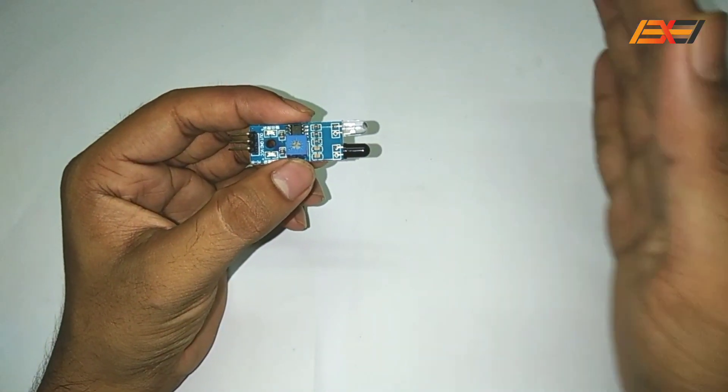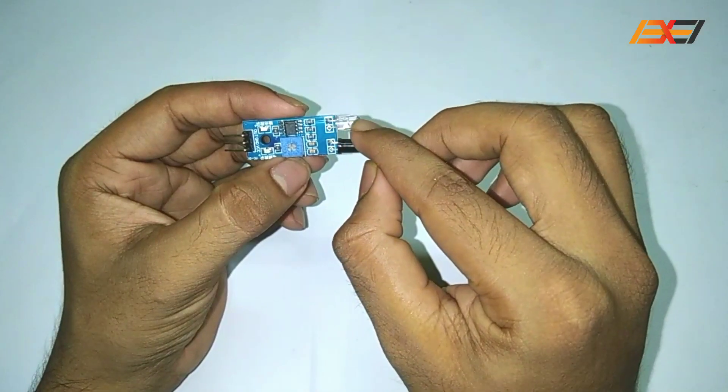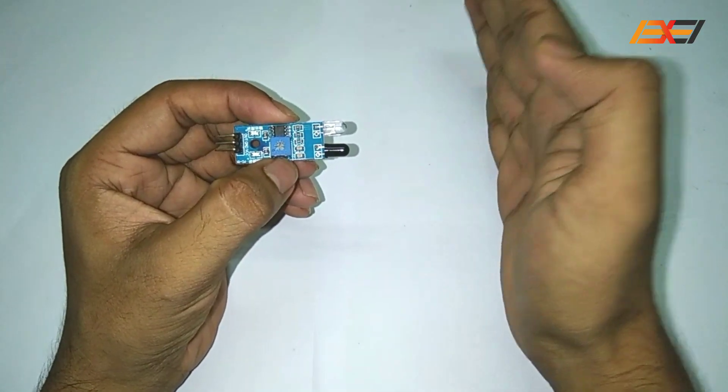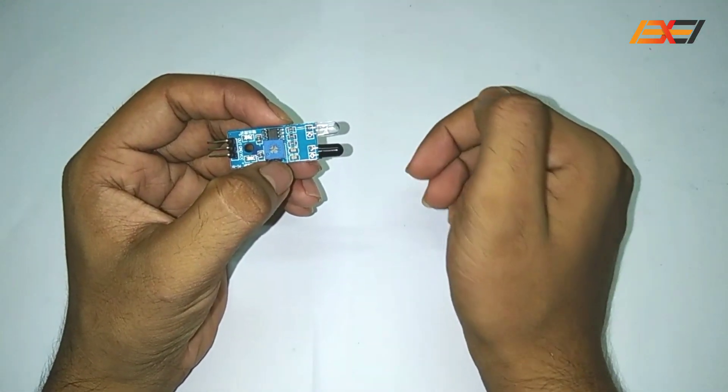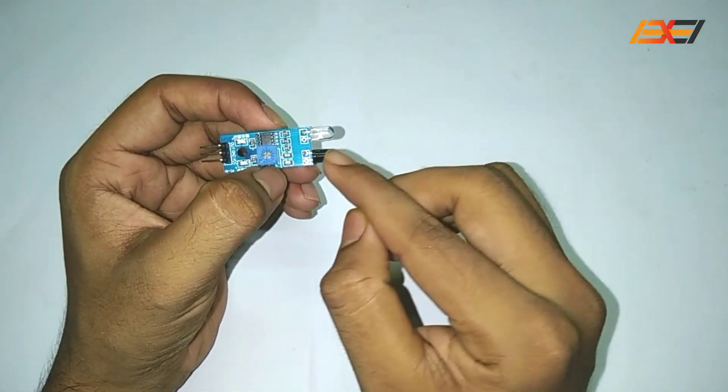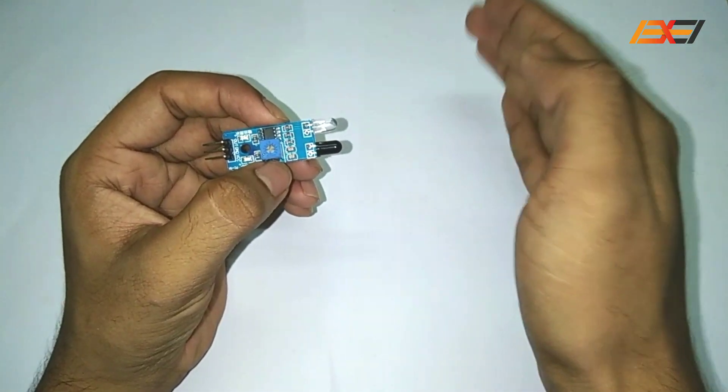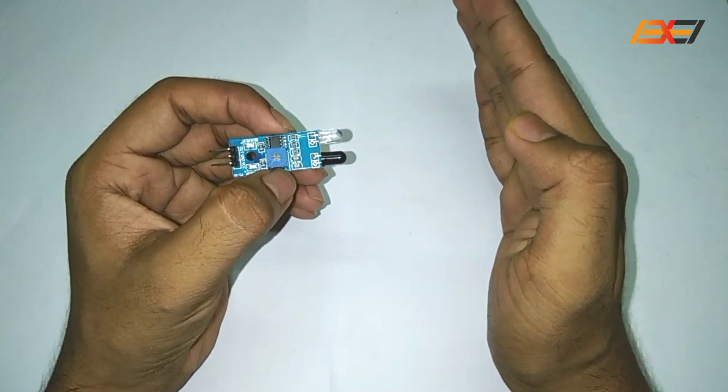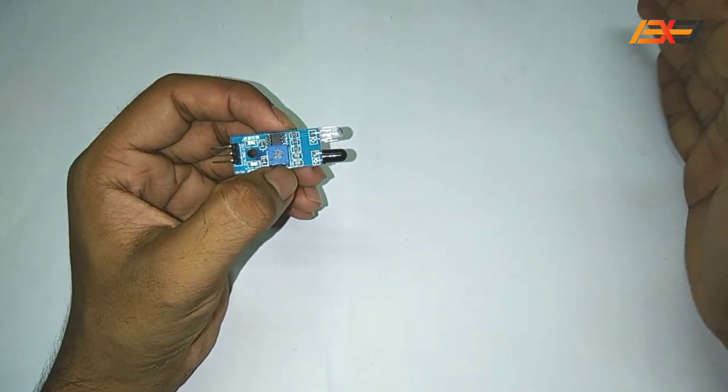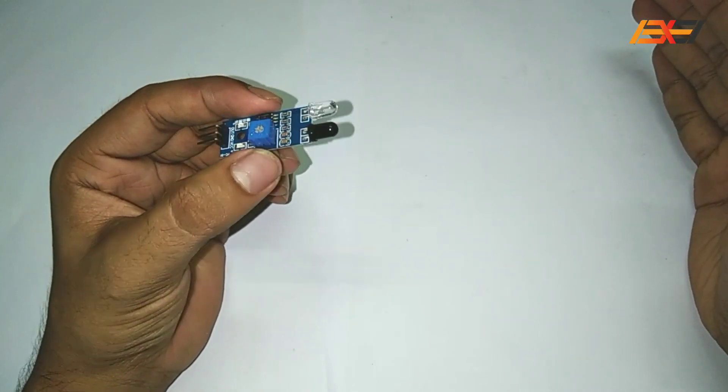Now what happens when an object comes in front of this IR sensor, within the range of this IR sensor, the infrared radiations emitted by this TxLED fall on the object and the object reflects those infrared radiations. If those reflected infrared radiations fall on this black LED then it gives one as output. And if the reflected infrared radiations do not fall on the black LED or if the object is not in the range of this infrared sensor, then the black LED will not receive any infrared radiation and will give zero as output.